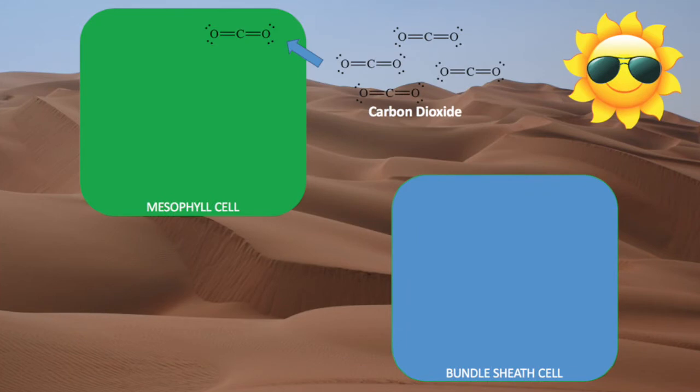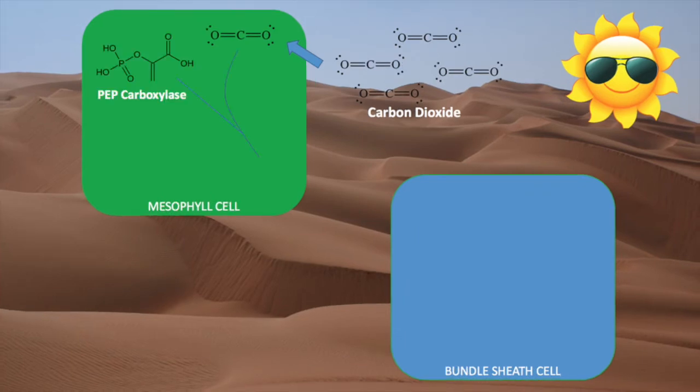First, CO2 enters the cell. C4 plants use an alternate enzyme, PEP carboxylase, to fix incoming carbon dioxide. PEP carboxylase has no photorespiration activity and has a higher affinity for CO2 than rubisco.